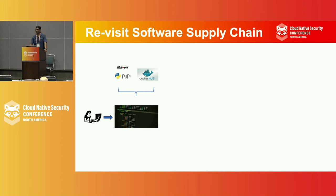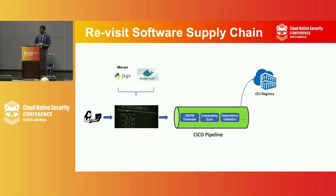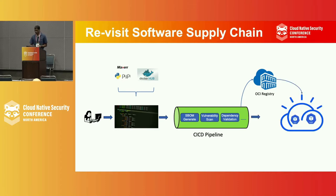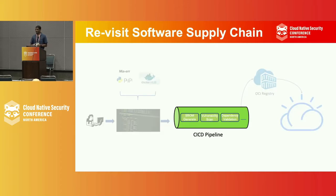Let's revisit the software supply chain. It typically starts with the developer who is writing code, and while writing the code they declare various dependencies — like package dependencies and image dependencies. Then we run our CI/CD pipeline, where we do various security and compliance functions: we generate SBOMs, do vulnerability analysis, validate all dependencies to ensure they're coming from a trusted source. Finally, we build artifacts — typically an image — push it to a registry, and deploy it onto the cloud.